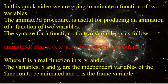The Animate3D procedure is useful for producing an animation of a function of two variables. The syntax for a function of two variables is as follows: Animate3D, F(x, y, t), x equals a..b, y equals c..d, t equals p..q, Options.